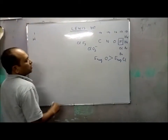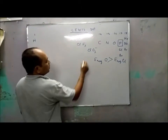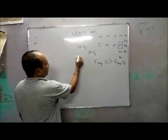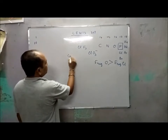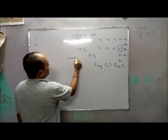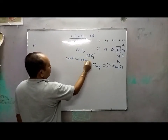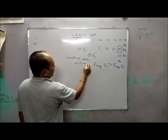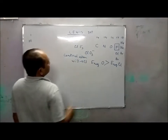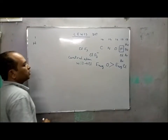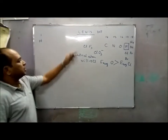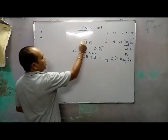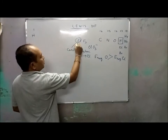If the compound or ion is ClO3⁻ (chlorate), then which one will be the central atom? It will be chlorine, because the electronegativity of oxygen is greater than that of chlorine. So in both cases — ClF3 and ClO3⁻ — the central atom will be chlorine.